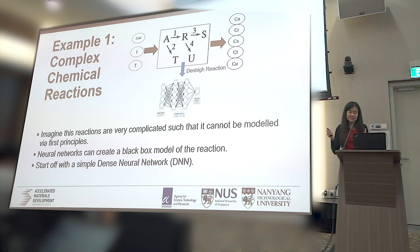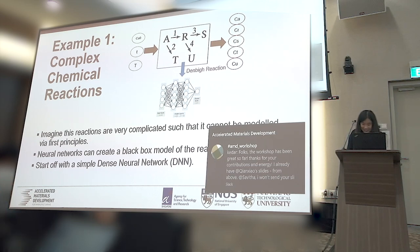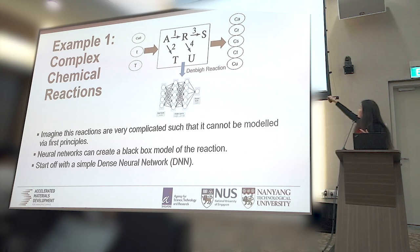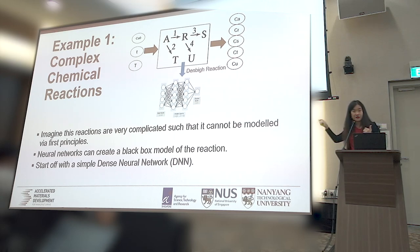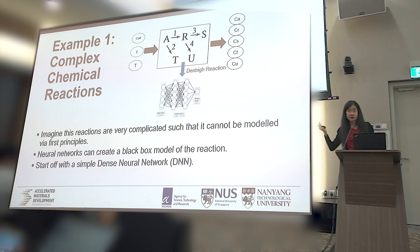Now let us go to a new example to show how to use neural networks. The first example involves a complex chemical reaction — the Denbigh reaction — with series and parallel reactions together. We don't know how it happens, so can a neural network model describe the input-output relationship? This reaction system has been well-studied, so we are lucky to have a kinetic model. We can compare our model-generated data with actual data to see model performance and validate that the neural network model gives you the physical insight.